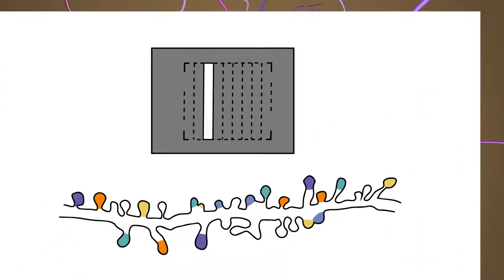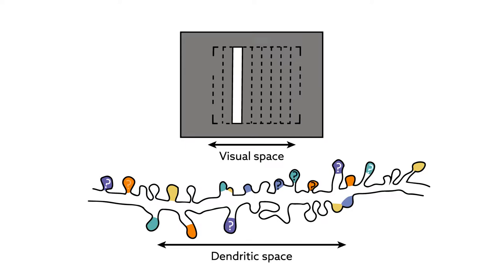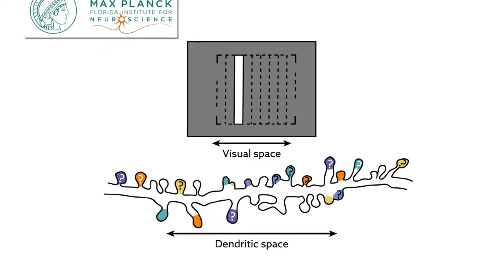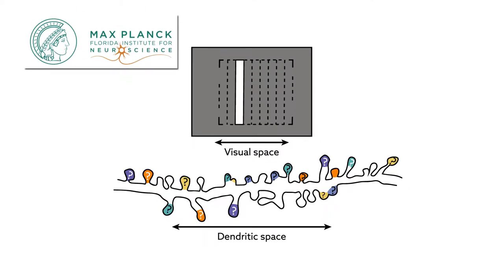One proposed mechanism is spatial clustering of synaptic inputs. Now, researchers from the Max Planck Florida Institute for Neuroscience report that synaptic inputs carrying visual information are clustered at a scale of 5 to 10 microns, sharing functional properties and activity.